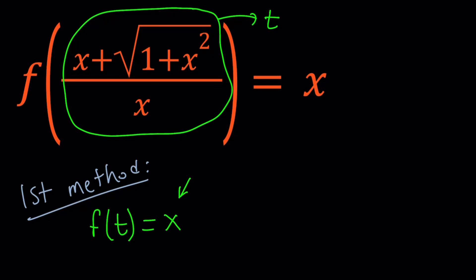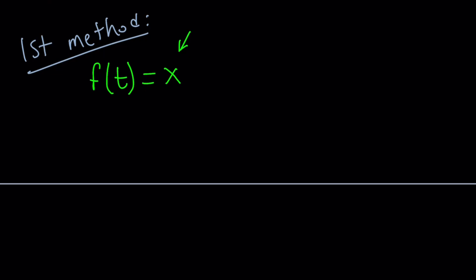So I'm going to try to solve for x from this mess. Let's go ahead and see how we can do it. So I have x plus the square root of 1 plus x squared divided by x equals t. Let's go ahead and cross-multiply. x plus the square root of 1 plus x squared equals xt.